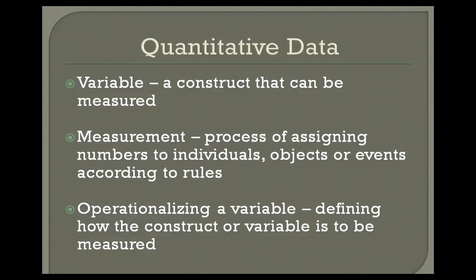When we think of quantitative data, one of the terms you hear all the time is a variable. A variable is a construct that can be measured. For example, if you think of something like intelligence, you know what you mean by that construct and you know the people who you think are highly intelligent. More simply, if we talk about height, that's another variable we could measure.